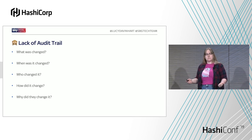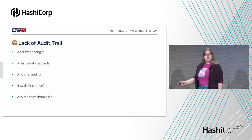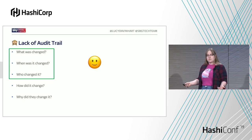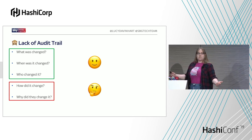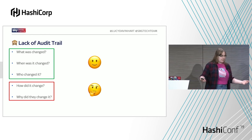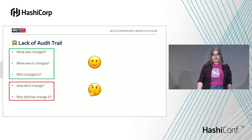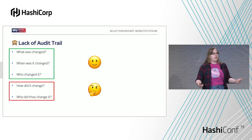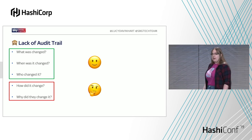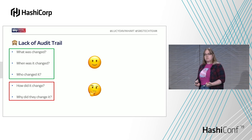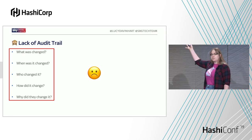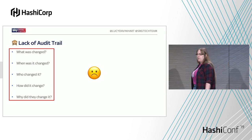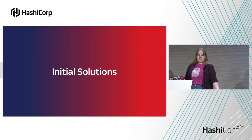But you can only answer so many questions with audit logs. You can see when someone has written to a secret, who they are, and when they did it. But you can't see what change they made — which is a good thing; you don't want secrets appearing in your audit logs. And Vault isn't psychic, so you have no idea what change they've made. We don't have infinite storage, so we don't have infinite retention on our audit logs — anything past the retention period is gone, lost to history.